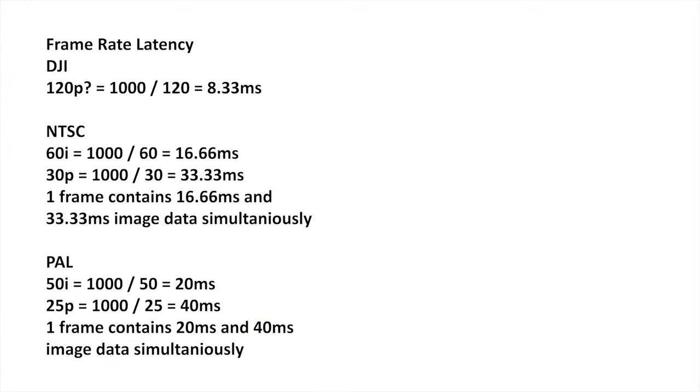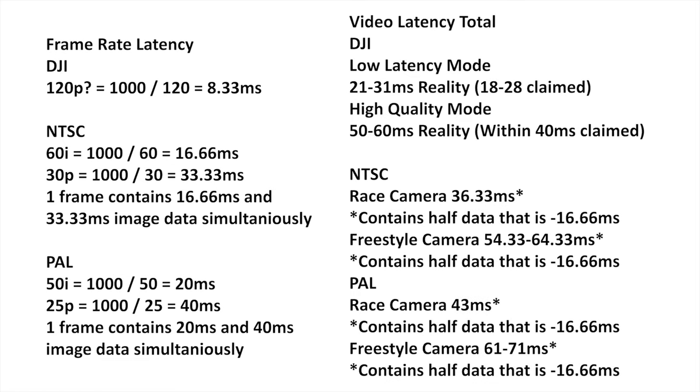When people compare DJI latency against analog latency and say they can't fly DJI because of its variable latency, it gets a bit annoying. DJI runs the camera at 120 frames per second, and if we do the same math — dividing 120 frames into 1000 milliseconds — that's an 8.33 millisecond delay between images being sent, which is a lot less than any analog system can achieve. Now it's HD, so there's a lot more processing going on before it gets to your goggles, which is where the latency comes in.